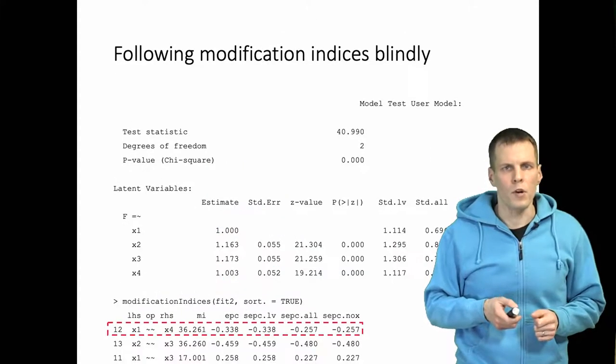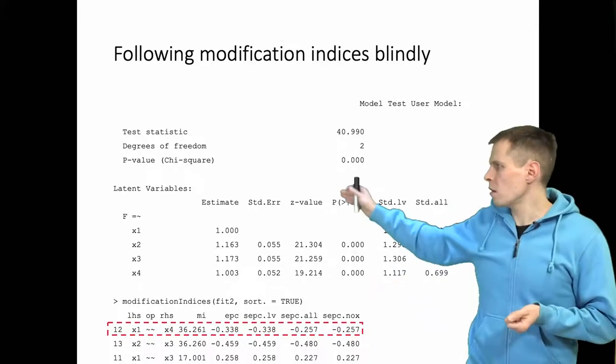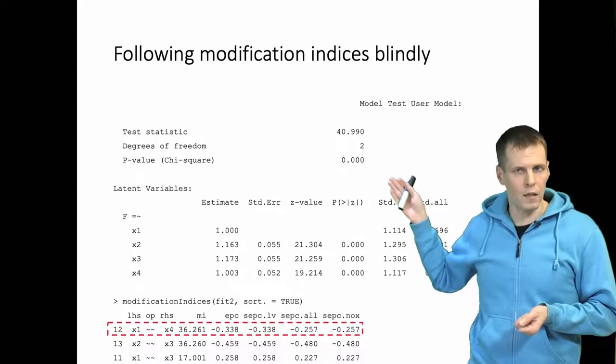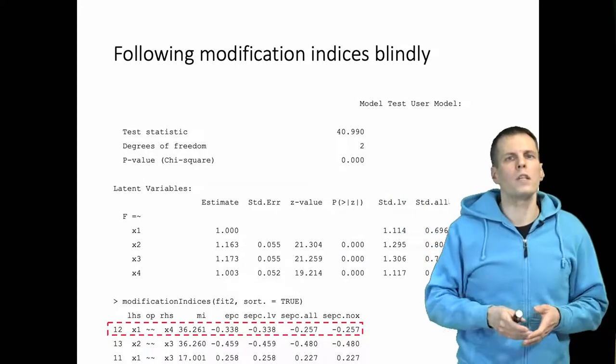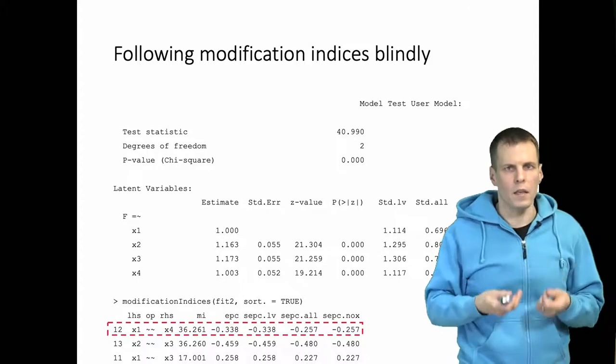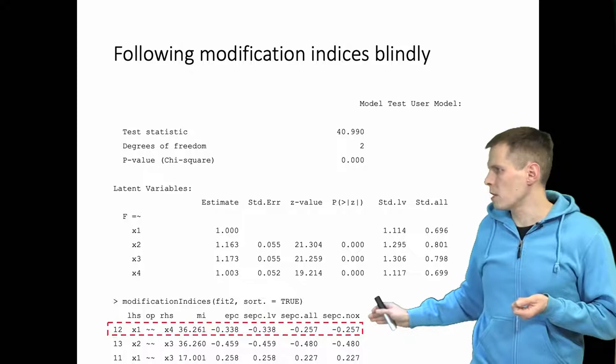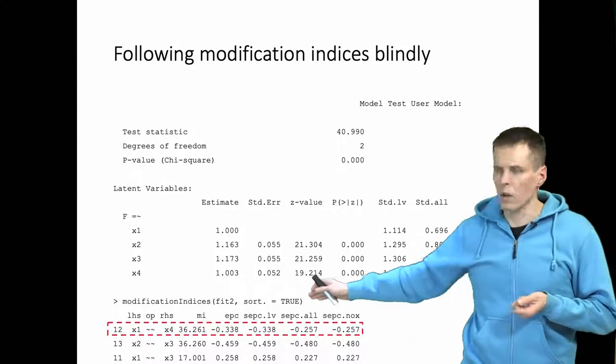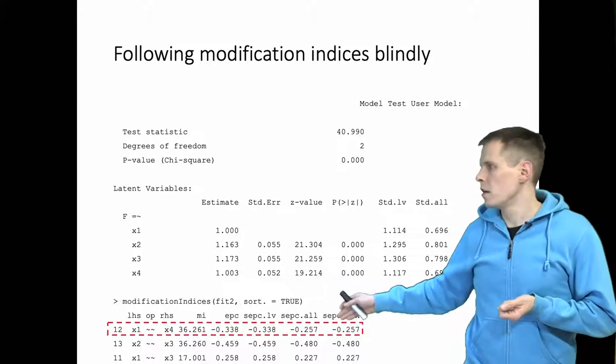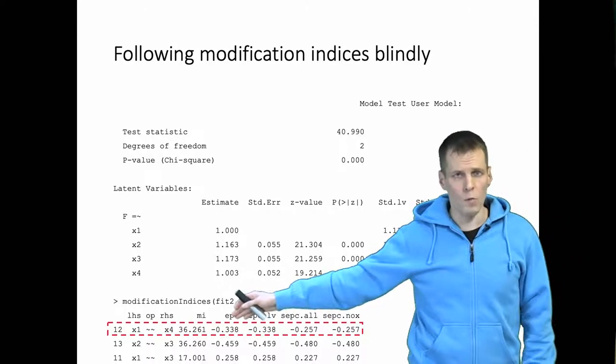The second problem is following modification indices blindly. So we have another data set, we have the same model, we have a highly significant chi-square, and we start addressing this highly significant chi-square by adding things to the model. What we do first is that we take the modification indices, we saw that the x1-x4 correlation—if we add that to the model, then our chi-square will increase a lot.